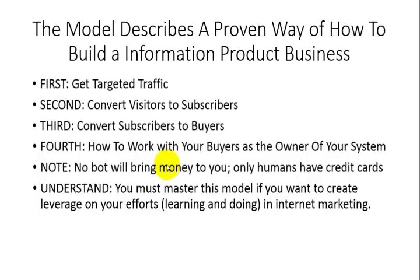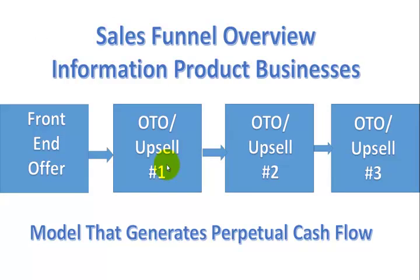I want to give you a visual of what the model actually looks like. This is the sales funnel overview we're going to be talking about in this course, and you'll notice that it is simple. It's based on a front-end offer, then an upsell or OTO, another upsell and OTO after that, and another upsell and OTO after that. You may notice there's no downsell — I'll be explaining how that works inside the course. When you generate targeted traffic to this model, it will generate perpetual cash flow, so keep it handy to understand how everything fits together.